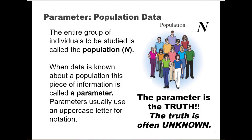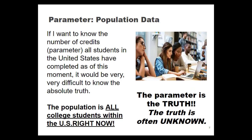A parameter is population data. When data is known about a population, this piece of information is called a parameter. Parameters usually use an uppercase letter for notation — the uppercase may either be a regular Roman alphabet letter or it can be part of the Greek alphabet, also uppercase. The most important thing to remember about the parameter is that the parameter is the absolute truth, and often the truth is unknown. For example, if my area of research is studying college student success and I wanted to know the number of credits — the parameter — all students in the United States have completed as of this very moment, it would be very difficult to know the absolute truth.